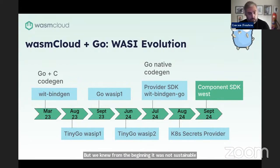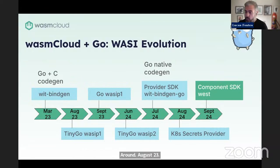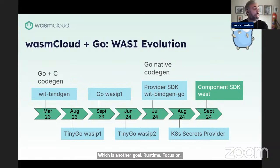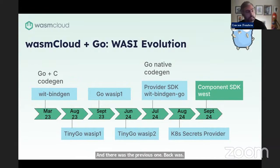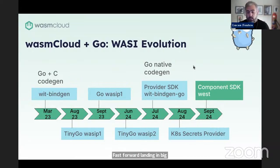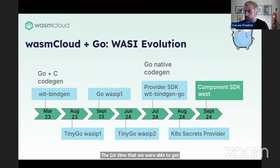Around August 2023, TinyGo — which is another Go runtime focused on smaller environments and embedded systems — implemented what we call the WASI Preview 1 spec. The WASI Preview 1 spec first landed in TinyGo, with a fast-forward landing in big Go in September 2023. And this was great — this was the first time we were able to get components in Go running inside a WebAssembly runtime.